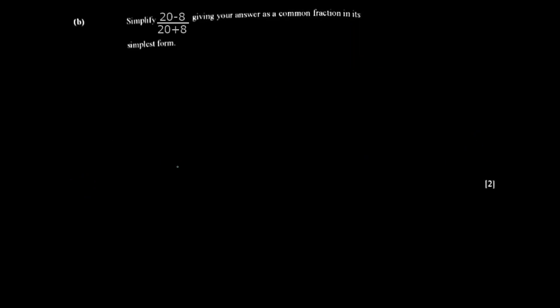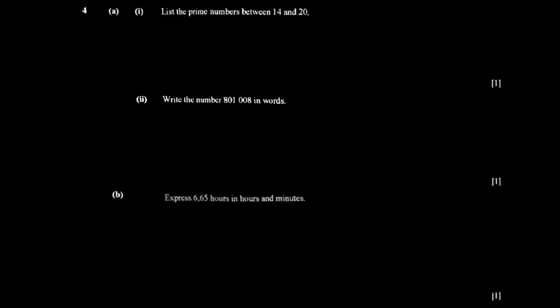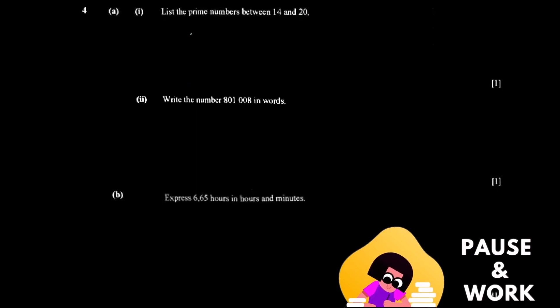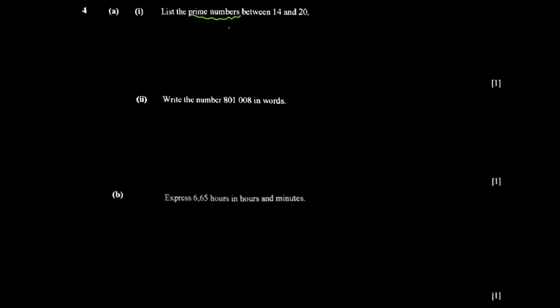Now we move to the next question: list the prime numbers between 14 and 20. Prime numbers are numbers that have exactly two factors — the number itself and one. For example, 3 has two factors: 3 and 1, with no other number dividing into it, so 3 is a prime number.